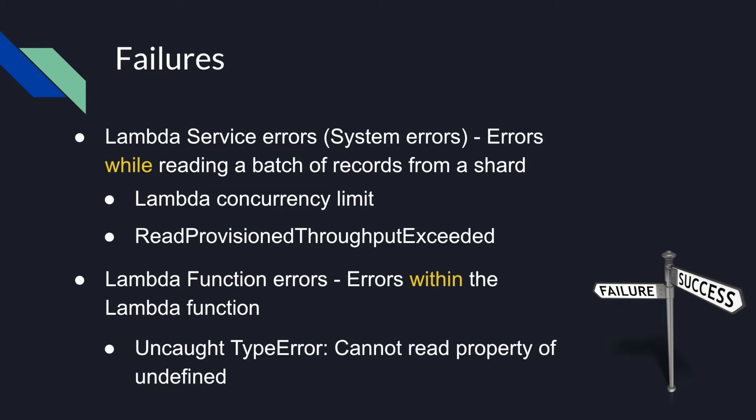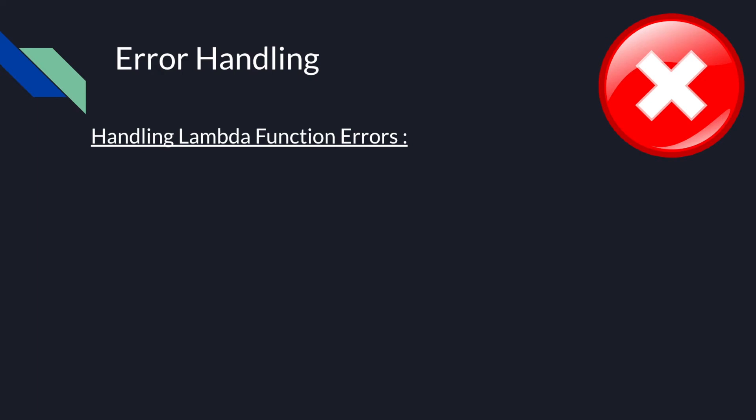The great thing is that the event source mapping will take care of Lambda service errors on your behalf — this is one of the great strengths of serverless computing. But what happens when an error occurs while processing the batch of records in the Lambda function itself? By default, Lambda will try to process a batch of records over and over again until it succeeds or until the records in the batch expire. This is not good behavior and may present unwanted results such as fruitless retries and causing the iterator age to increase. The way to deal with Lambda function errors is to implement error handling in your code along with the help of event source mapping.